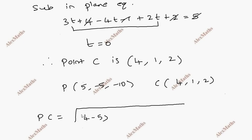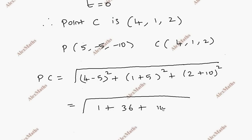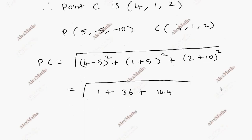Now we calculate the distance using the distance formula: root of (x2 minus x1) squared plus (y2 minus y1) squared plus (z2 minus z1) squared. We get root of 1 squared plus 6 squared plus 12 squared, which is root of 1 plus 36 plus 144, equal to root of 181 units.